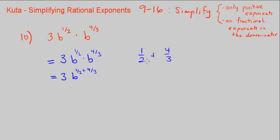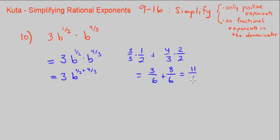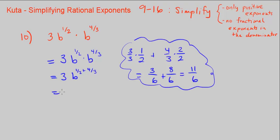We find the common denominator. Multiply 1 half by 3 over 3 and 4 thirds by 2 over 2. That gives us 3 over 6 plus 8 over 6, so we can add the numerators: that's 11 over 6. So our answer is 3b to the 11 over 6 power, and we are done with number 10.